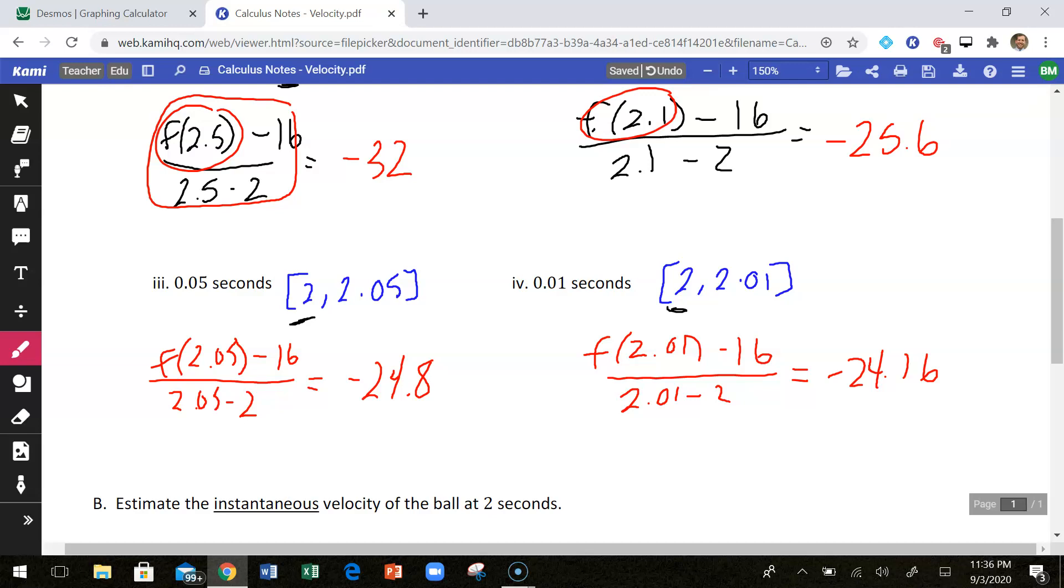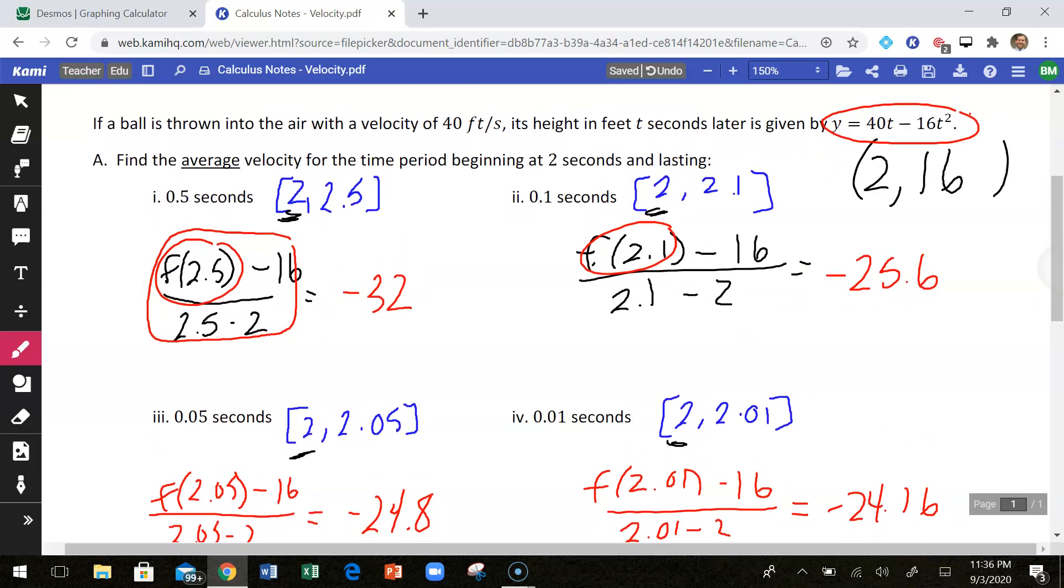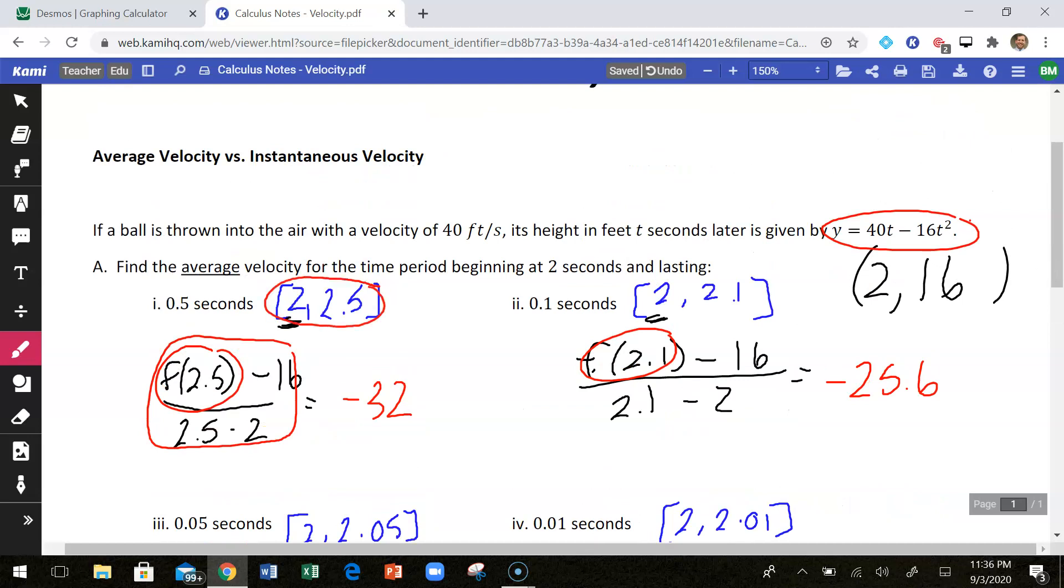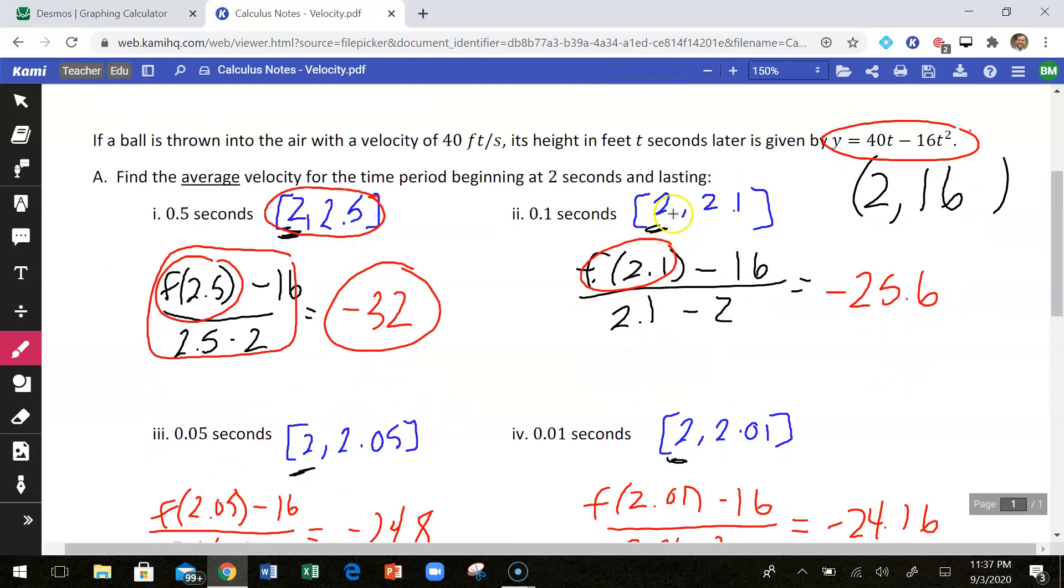And so that's what we're finding. The average velocity of the ball from time 2 to time 2.5. So over that half a second between time 2 and time 2.5, the ball was traveling at negative 32 feet per second. Now, what does the negative mean? The negative just means that the ball is either falling down or if you think left to right, I know that's not what we're talking about here, but that would be moving left. So moving in the negative direction in this case is meaning moving down. So the ball is falling at a rate of 32 feet per second. If we shrink that and we just look at the time interval from 2 to 2.1, the average velocity of the ball there was 25.6 feet per second moving downward.